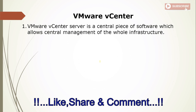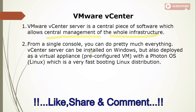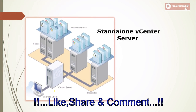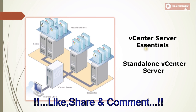Now the second component: vCenter Server. vCenter Server is a central piece of software which allows central management of the whole infrastructure. From a single console you can do pretty much everything. vCenter can be installed on Windows, but it's also deployed as a virtual appliance — a pre-configured virtual machine running Photon OS Linux, which is a very fast-booting Linux distribution. VMware used to use SUSE Linux Enterprise Server but has since switched to Photon OS. vCenter is available in versions like Essential, Essential Plus, Standard, and Enterprise.